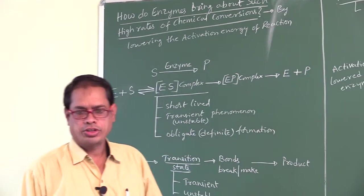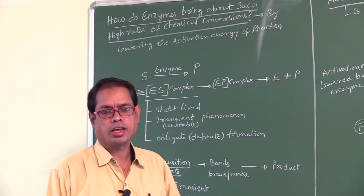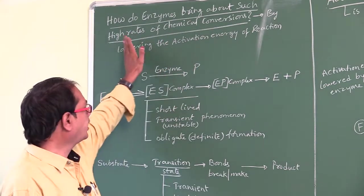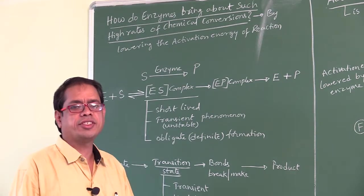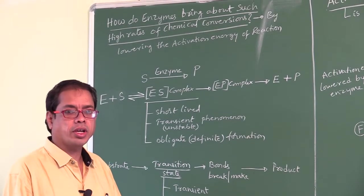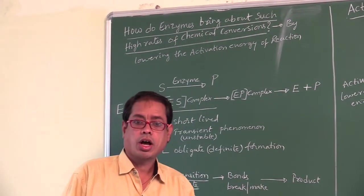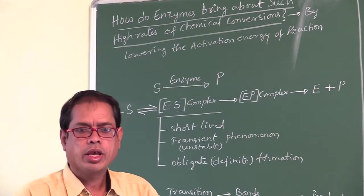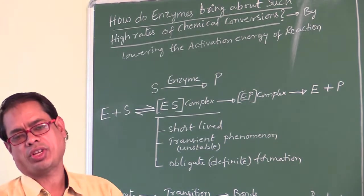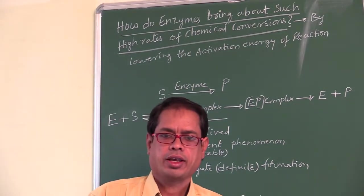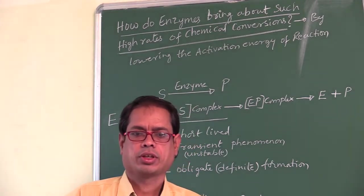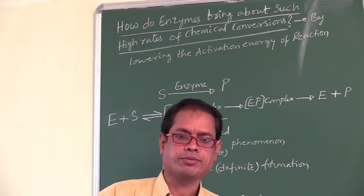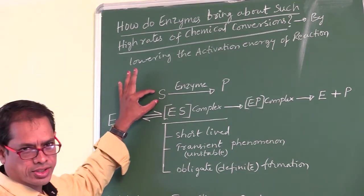Hi students, this is Botany PSR. Today we will discuss how enzymes bring about such high rates of chemical conversions. Enzymes bring about high rates of chemical conversions by lowering the activation energy. By using the enzyme, activation energy is lowered. We will also study what activation energy is and what happens if we do not use enzymes in chemical reactions.